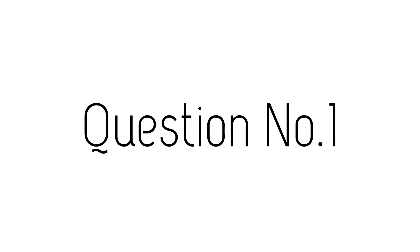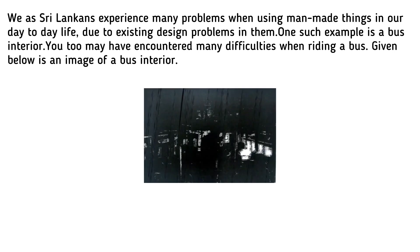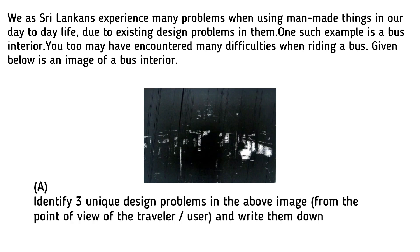To help you better understand what to expect, let's take a look at questions from the 2021 aptitude test. Typically the first main question is about a specific context and the current issues faced by people. In the 2021 test, the first question was about a Sri Lankan bus interior image. The first sub-question asks you to identify three problems that you can observe in the bus interior image as a traveler.